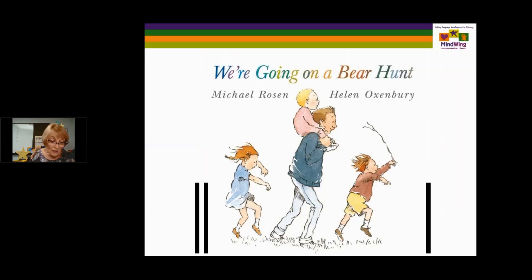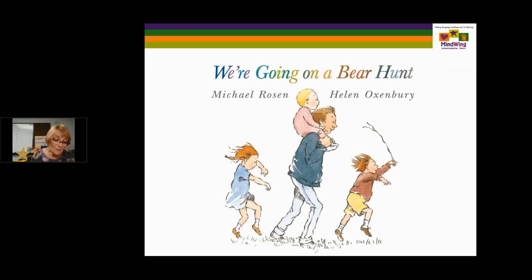We're Going on a Bear Hunt is a classic preschool book, wonderful for sounds and words like 'splash and splosh' and 'swishy and swashy,' gross motor skills, and illustrations in black and white and color. Onomatopoeia is one of the literary devices. The action sequence — they go out to find a bear, go past wavy grass, through the mud, past a river, look in a cave, then come back through those same places followed by the bear. So it's all imagination.